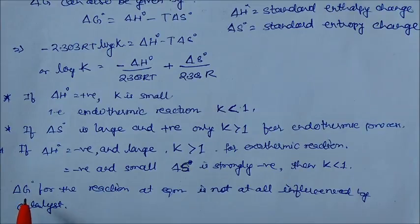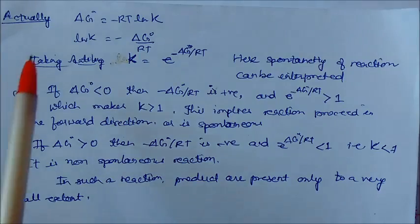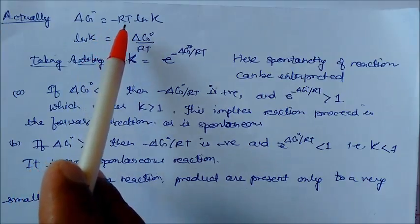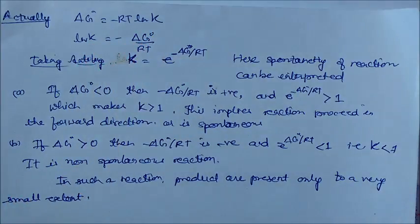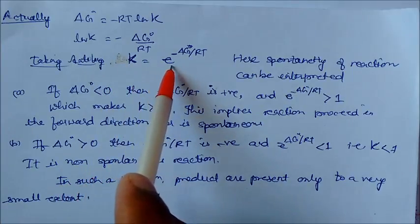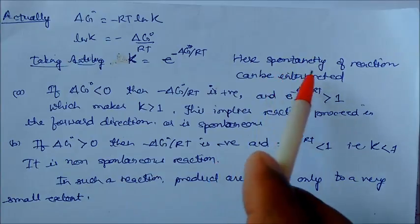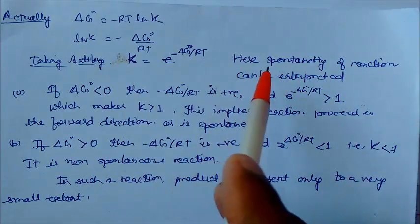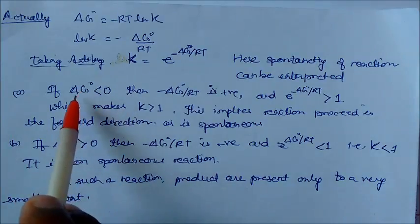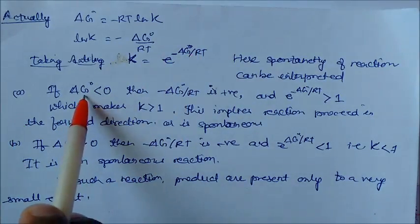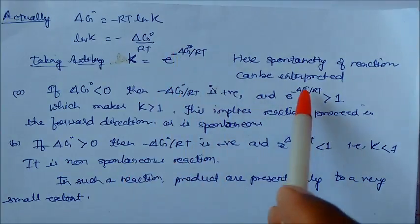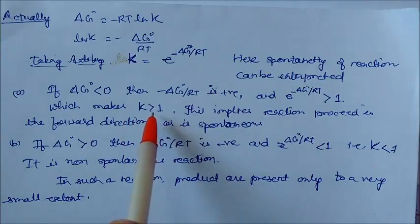Delta G° for a reaction at equilibrium is not influenced by a catalyst — adding a catalyst does not change delta G°. We can also write: delta G° = −RT·ln K, so ln K = −delta G°/RT, and taking the anti-log gives K = e^(−delta G°/RT). If delta G° is negative, the exponent is positive, giving K greater than 1, confirming the reaction is spontaneous.